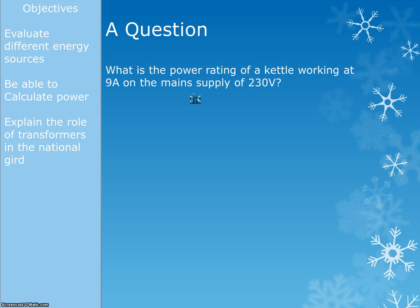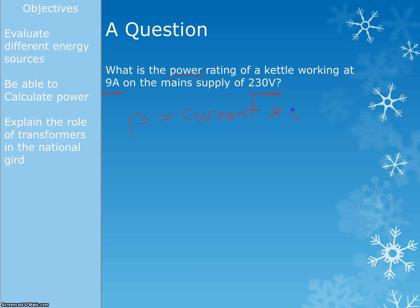Here's an example: What's the power rating of a kettle working at 9 amps on a main supply of 230 volts? First, underline the important words: power is what's asked for, 9 amps is the current, and 230 volts is the voltage. Going back to the equations, power equals current times voltage. So put the numbers in: 9 amps times 230 volts. Grab your calculator and you should get 2070 watts.